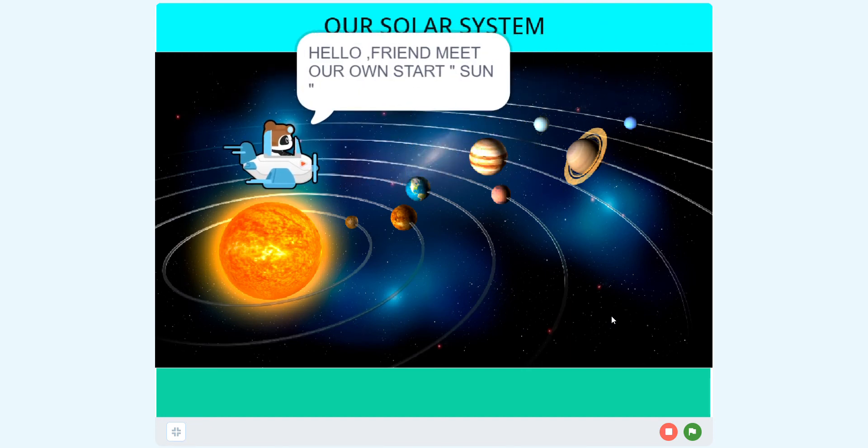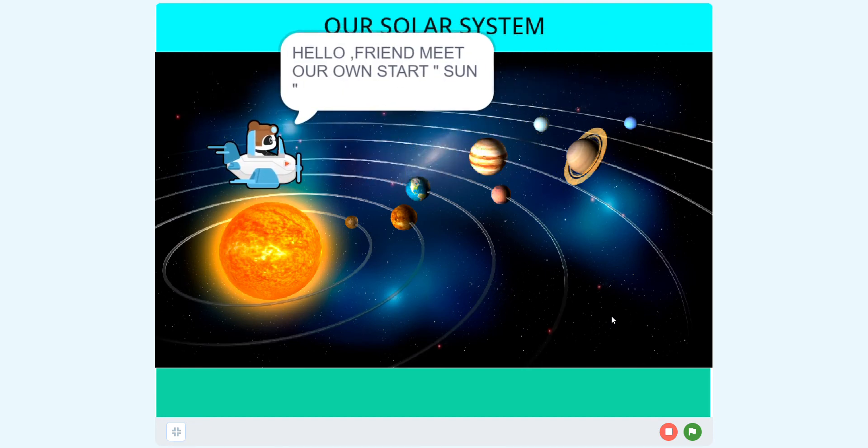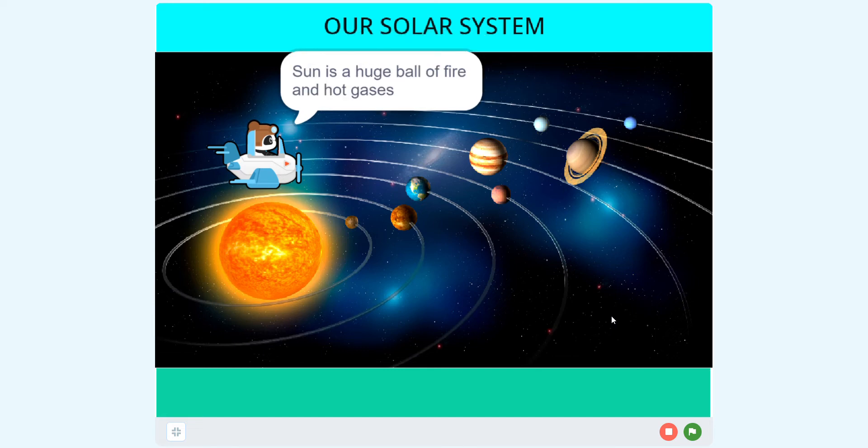Our first destination is Sun. Sun is a huge ball of fire and hot gases. Sun is a star and it is at the center of our solar system. Sun is the source of all energy. Sun is 100 times bigger than the Earth. Sun gives us light and life.